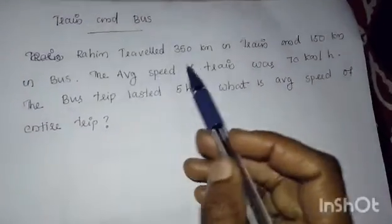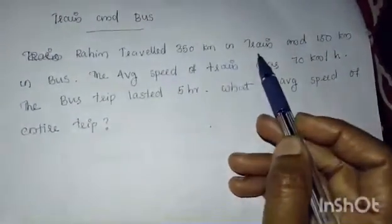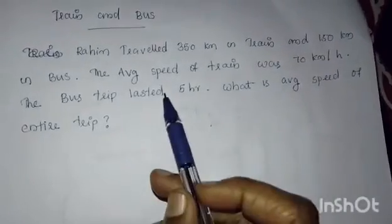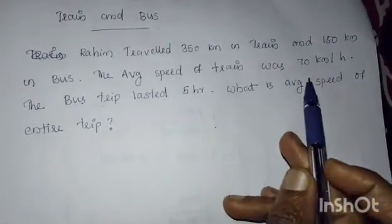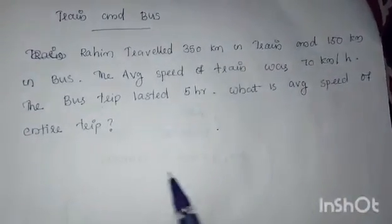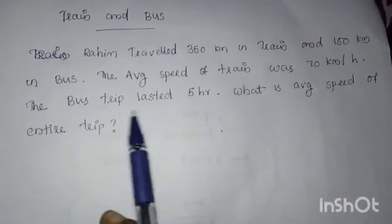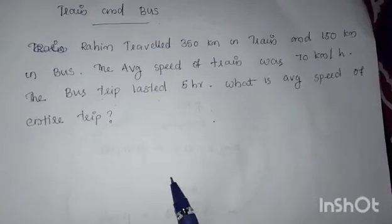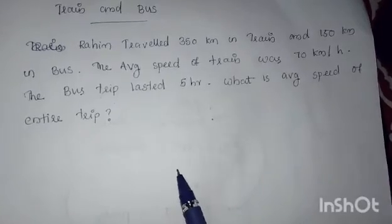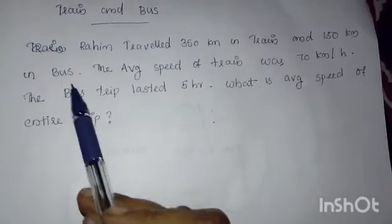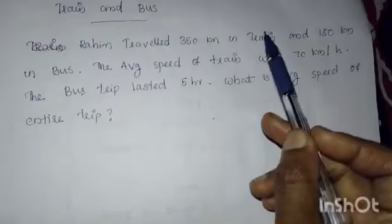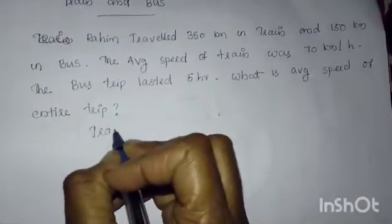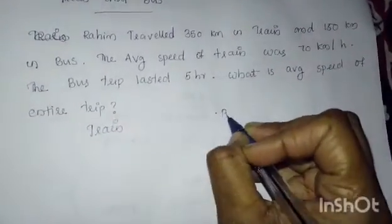Rahim traveled 350 km by train and 150 km by bus. The average speed of the train was 70 km per hour and the bus trip lasted 5 hours. What is the average speed of the entire trip? The entire trip consists of traveling by bus and train, so we can organize this into two columns: train and bus.